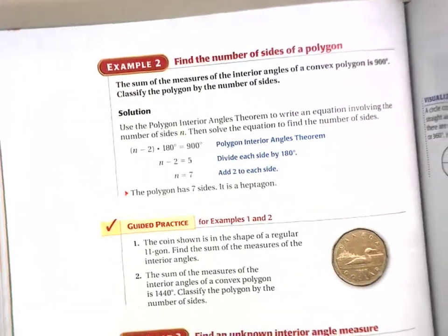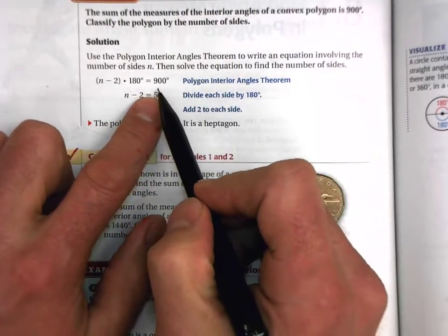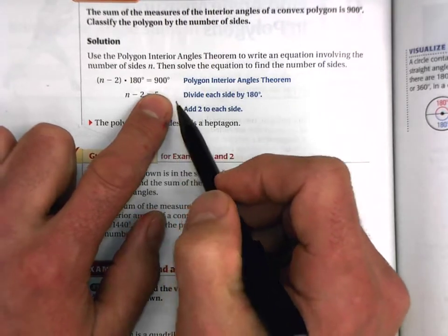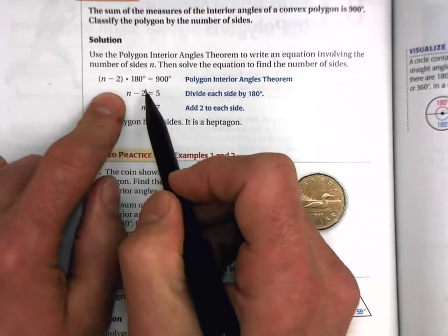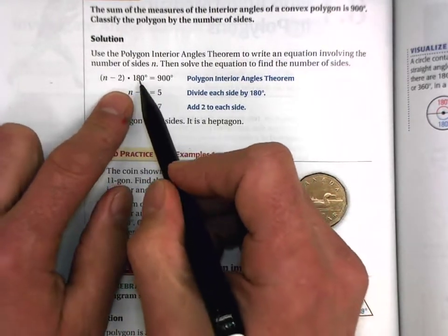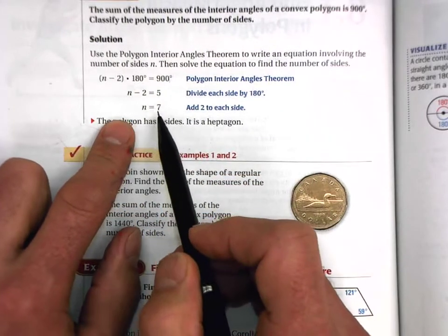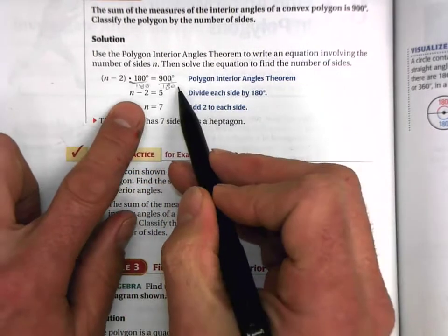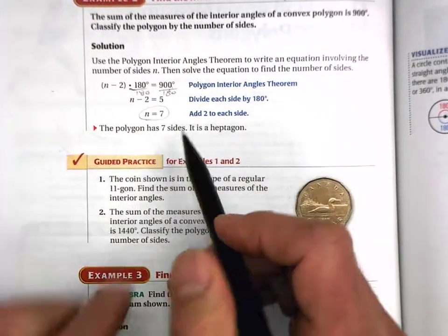Now let's look at example two. In this case, they tell us the sum of the interior angles is 900 degrees, and they want us to figure out how many sides this polygon has. We use our expression (n − 2) × 180 for the sum of interior angles of a convex polygon, set it equal to 900, divide both sides by 180, then add 2 to both sides to get n equals 7. So that is a heptagon with seven sides.